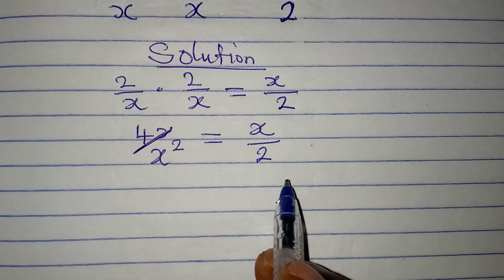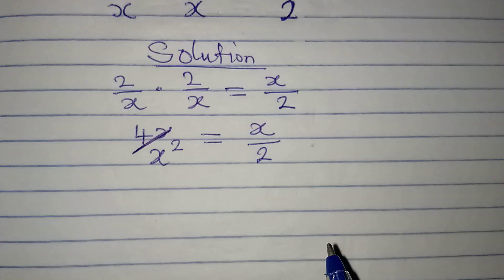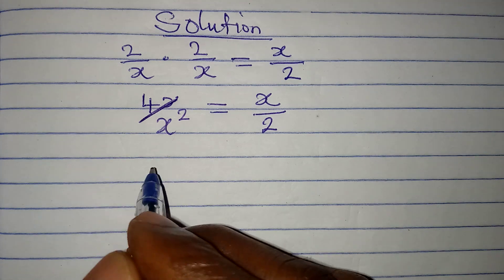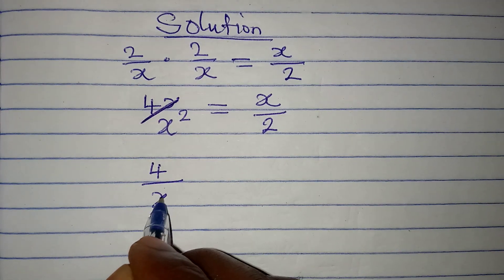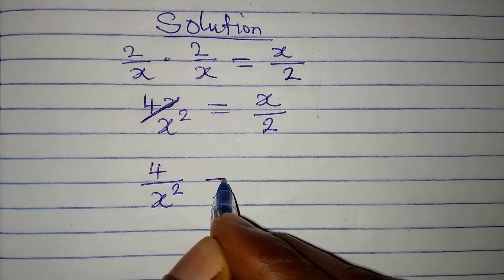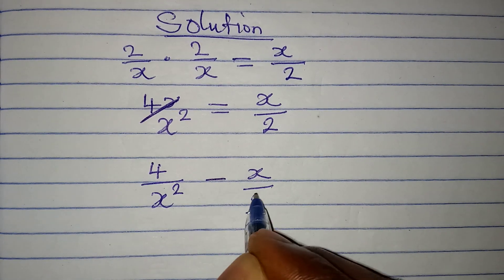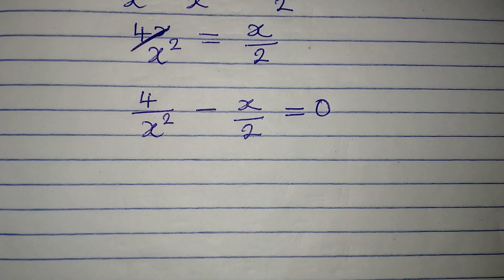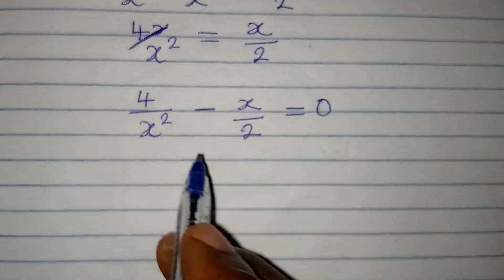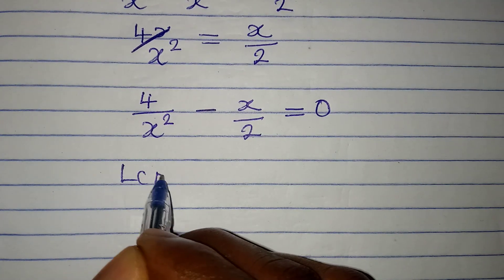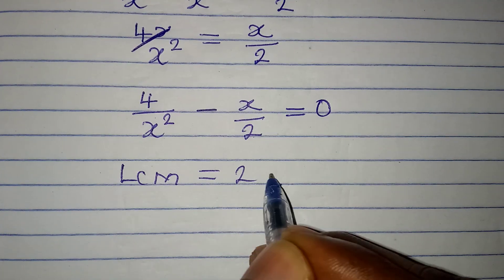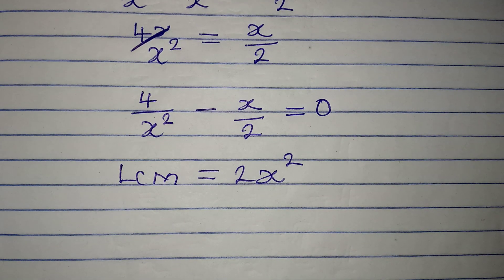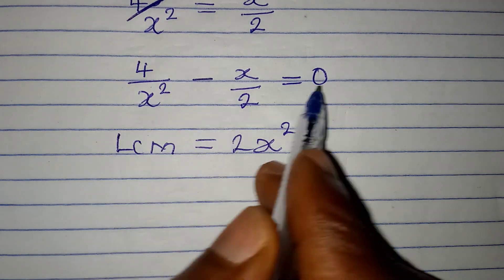We can find the LCM of both sides, or bring everything to the left, so that we have 4 over x squared minus x over 2 equal to zero. The LCM is going to be 2 multiplied by x squared, which is 2x squared.